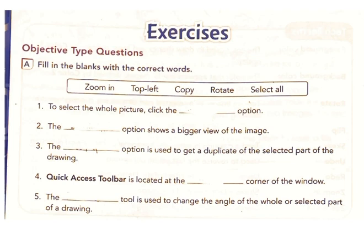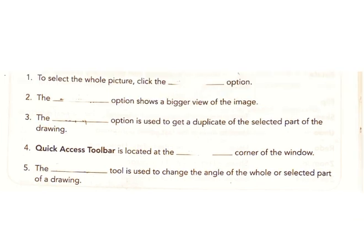1. To select the whole picture, click the Select All option. Answer: Select All. 2. The Zoom In option shows a bigger view of the image. Answer: Zoom In. 3. The Copy option is used to get a duplicate of the selected part of the drawing. Answer: Copy.